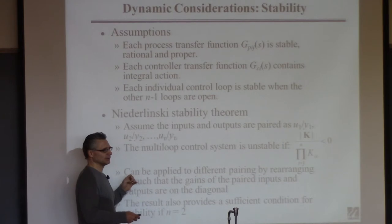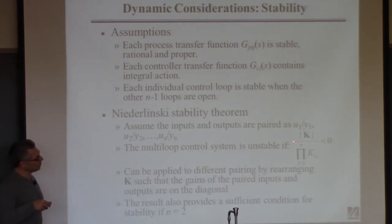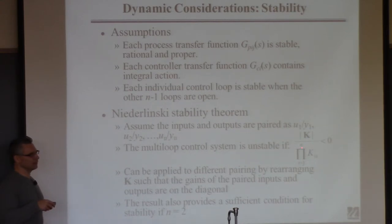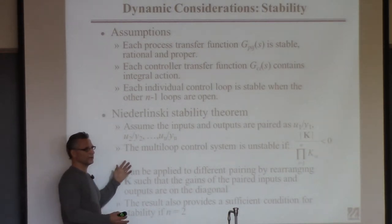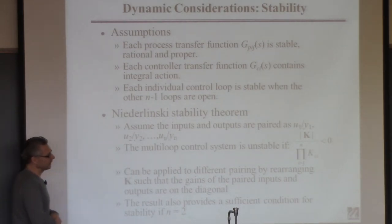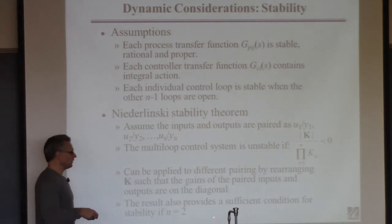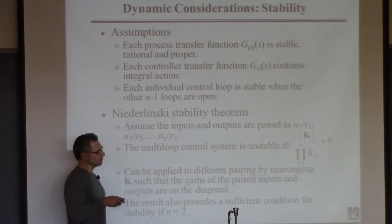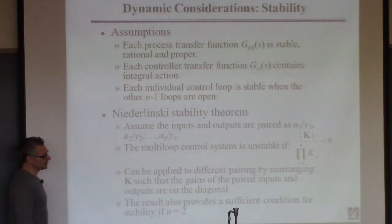If this thing passes — greater than zero — you get what's known in science as a warm, fuzzy feeling. If it fails, you get something called a nauseous feeling, because then you'd have to go back and start all over. You've come up with pairings that are guaranteed not to work — you couldn't see it at steady state, but now dynamically they're not going to work, and you've got to pair again. One good news: if the system is 2x2, this is actually also a sufficient condition. If it's greater than zero, you're guaranteed it will work — but it's only sufficient when n is two.